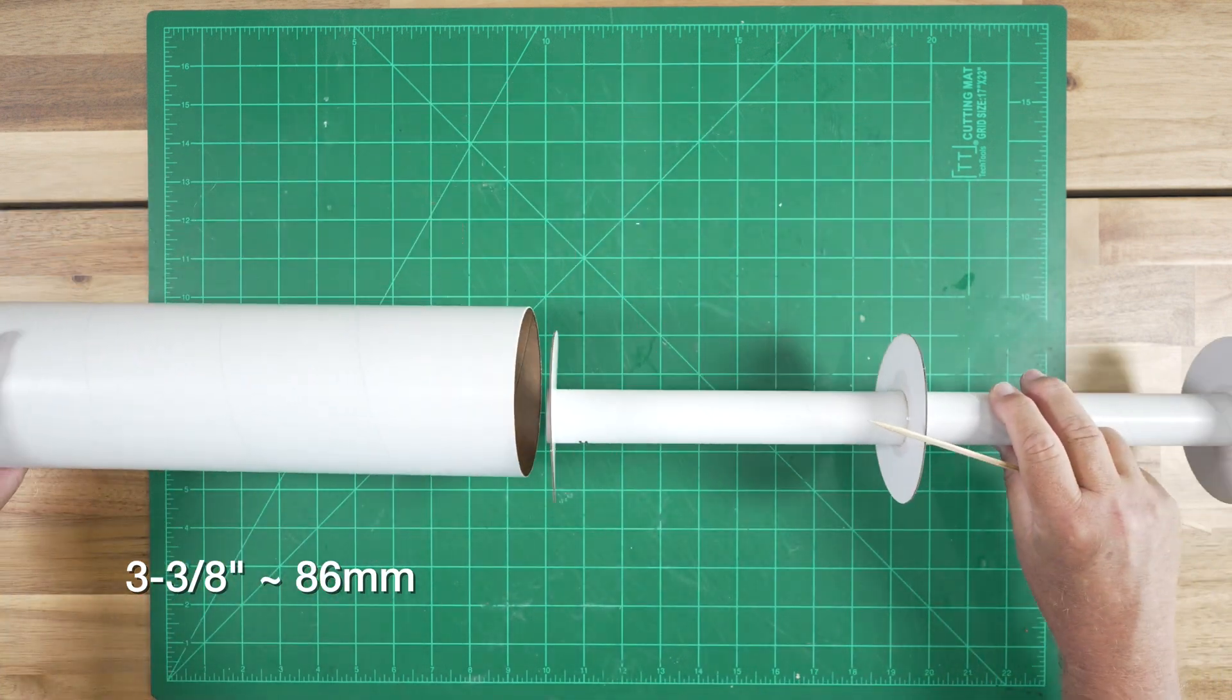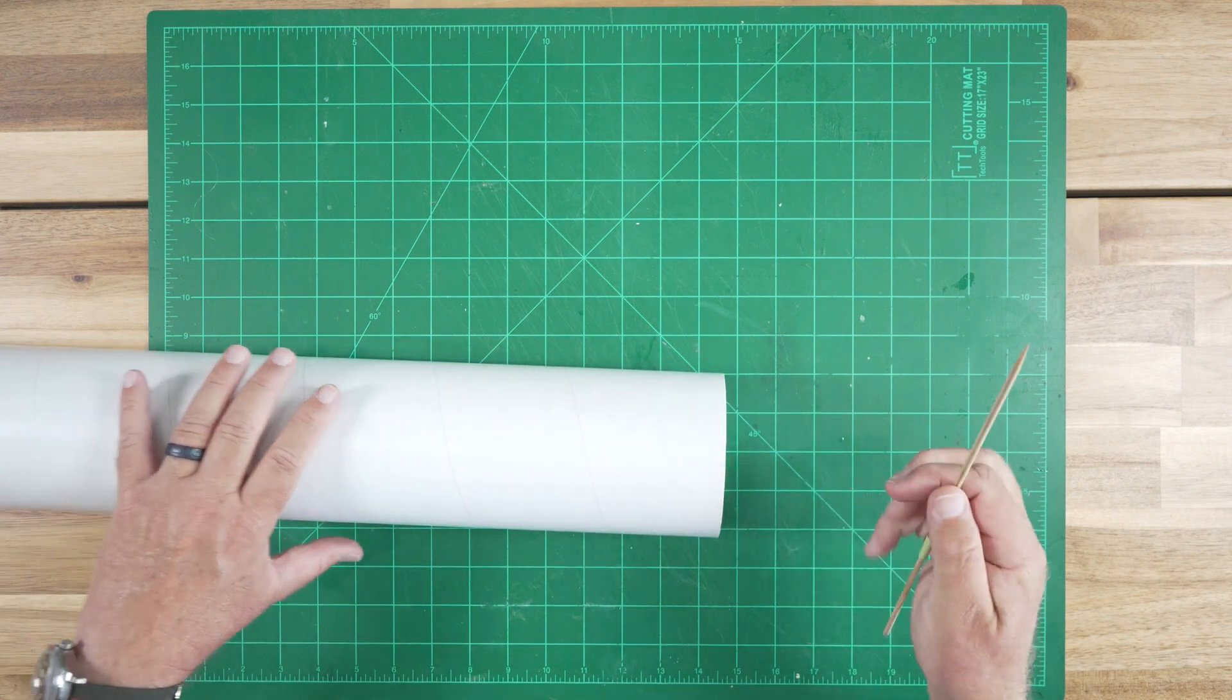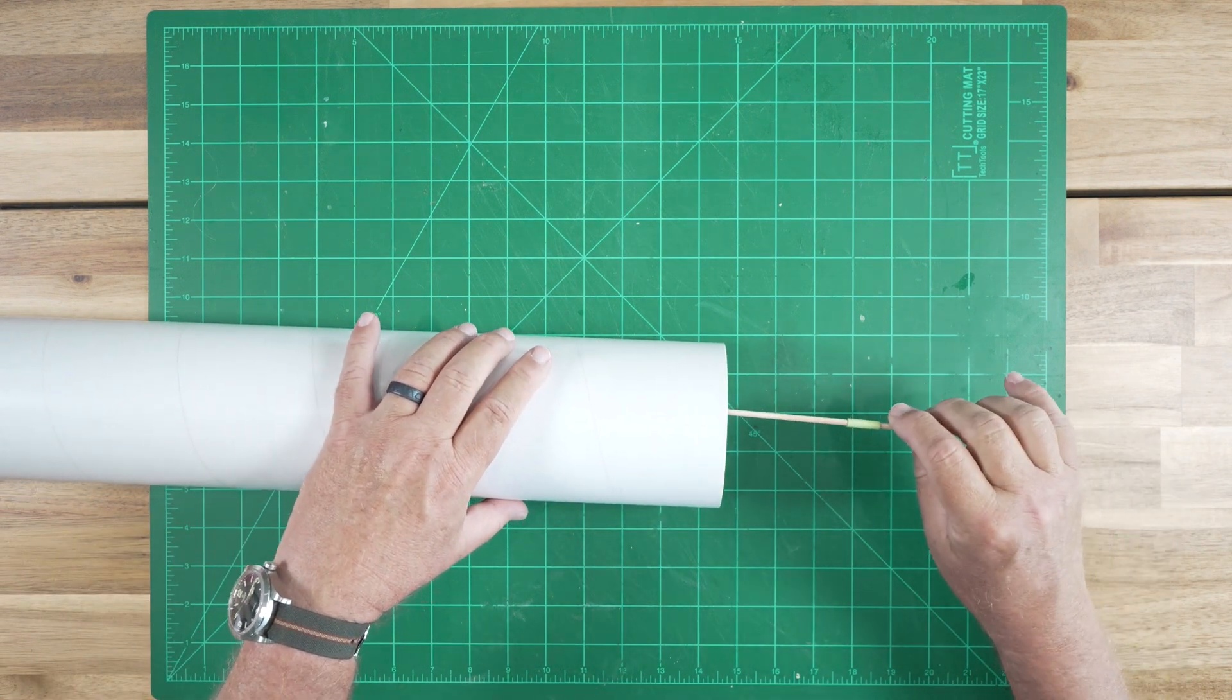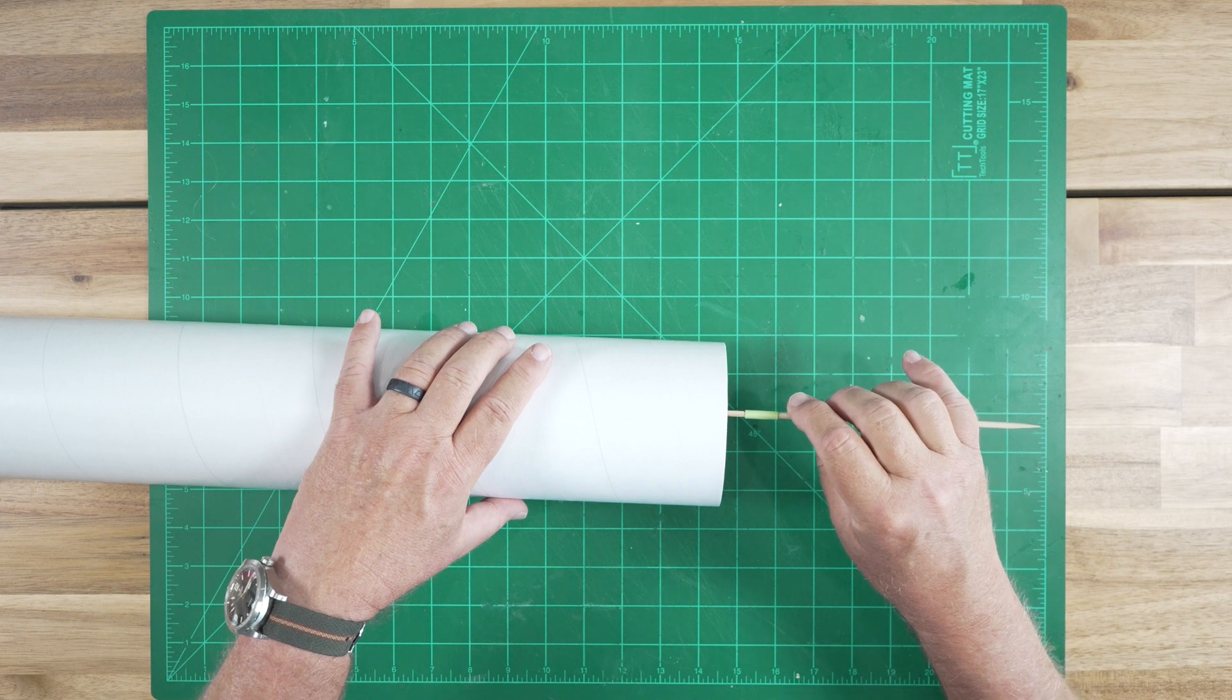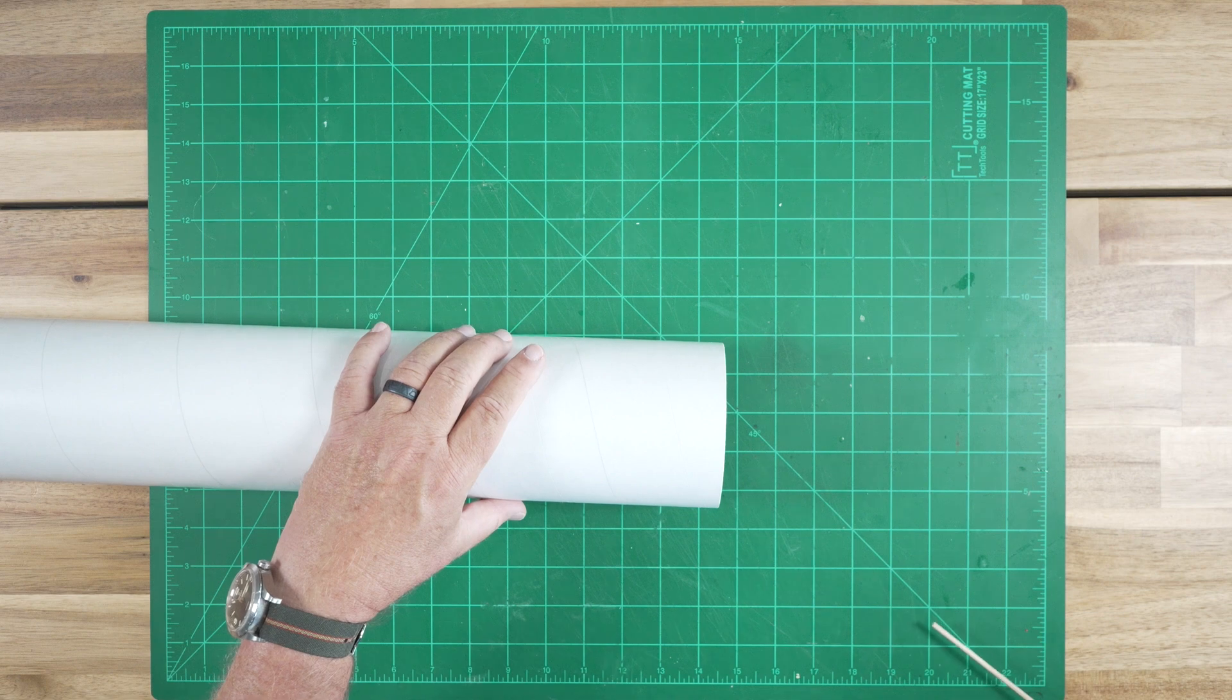With our glue inside the tube, we'll put the motor mount in place. And when this green tape is up against the aft edge of the tube, we'll know we're in the right position.